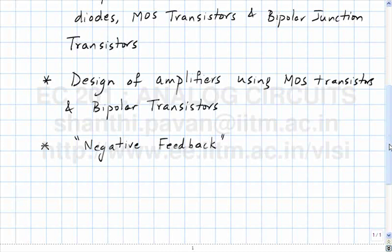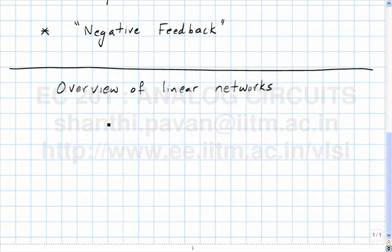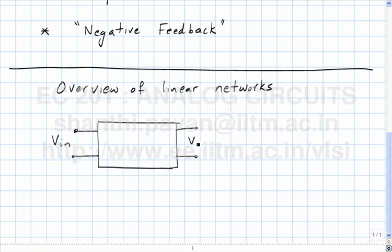Let's begin by taking a quick overview of linear networks. Let's say we had a black box with some input voltage V in and some output voltage V out. When I plot V out versus V in, I get a straight line like this.